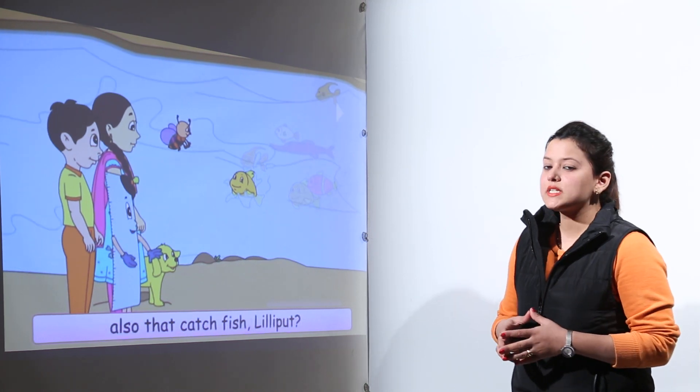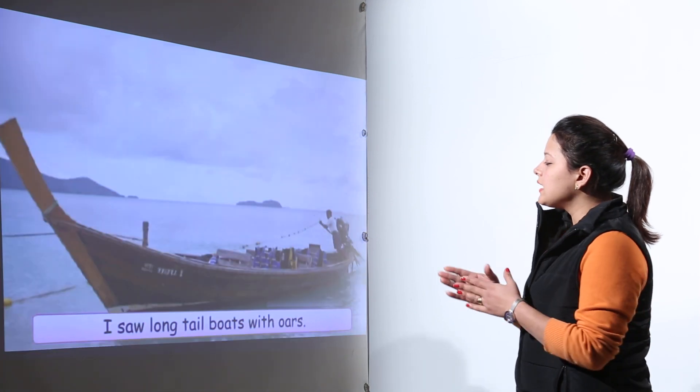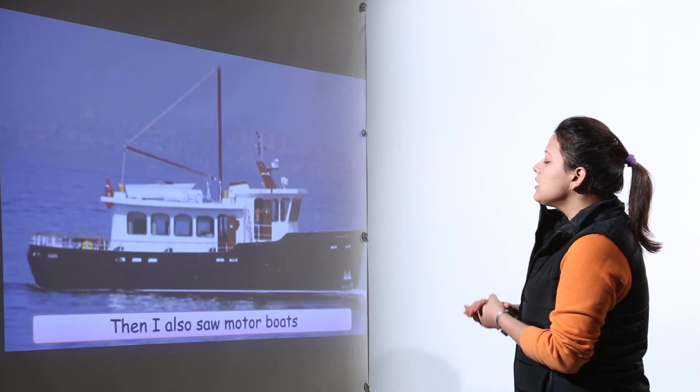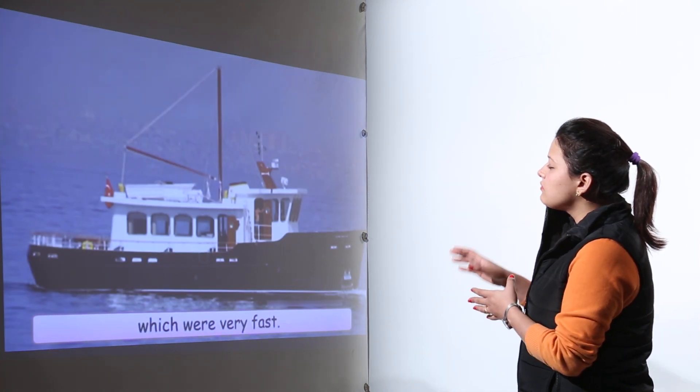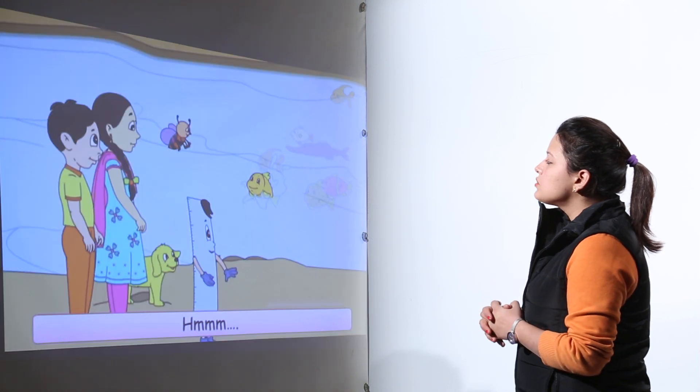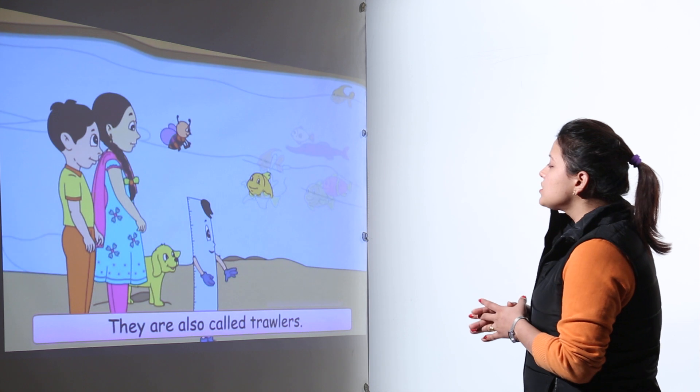Are there other types of boats that fishermen use to catch the fishes? Yes, now Lilliput is telling about the long tail boats with oars. Then she is also telling about these very fast boats. These are known as the machine boats. We can see so many different types of boats are used to catch the fish.